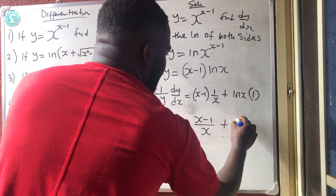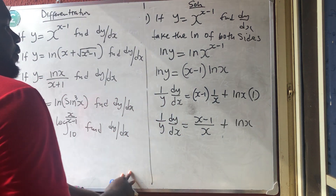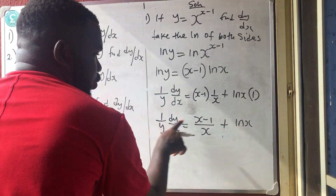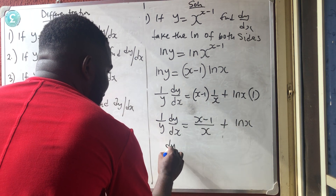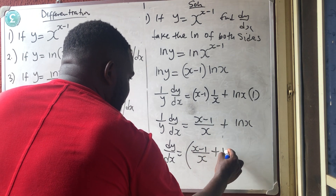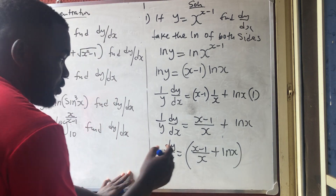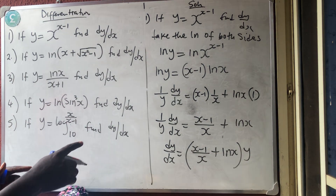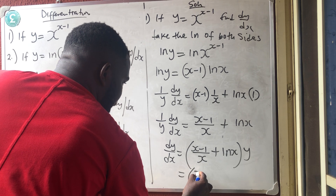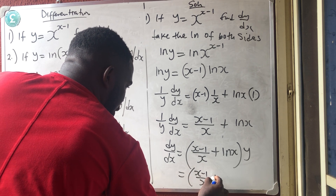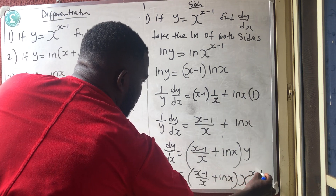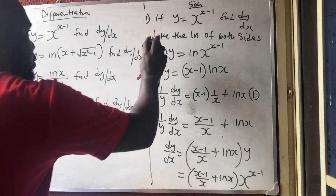Multiplying both sides by y, dy/dx equals (x−1)/x plus ln x, all multiplied by y. Since y equals x^(x−1), the final answer is dy/dx equals x^(x−1) times [(x−1)/x + ln x]. That is the answer for question 1. Let's go to number 2.